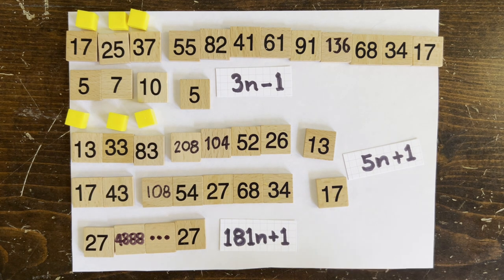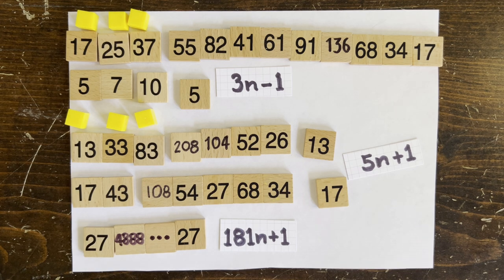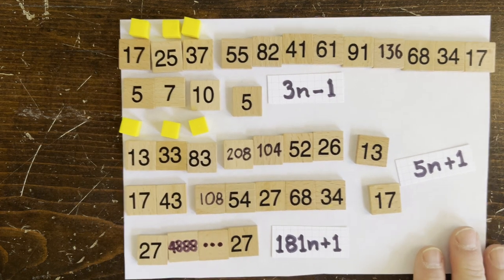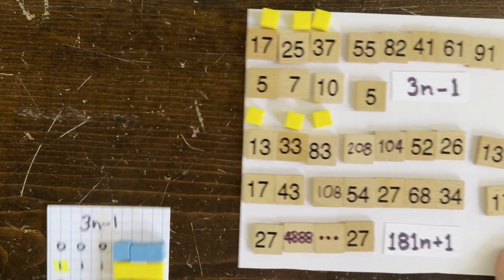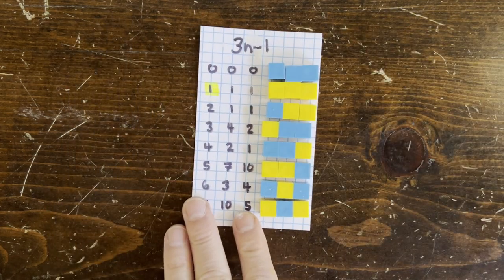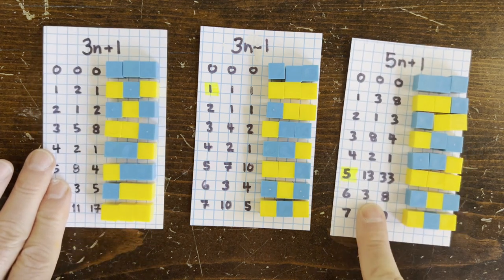Actually, numbers of the form 2 to the n plus 1 are exactly the numbers that rocket up for the 3n minus 1 problem. The rocket numbers for 3n plus 1 are 2 to the n minus 1, which is why 31 takes so long to reach 1.